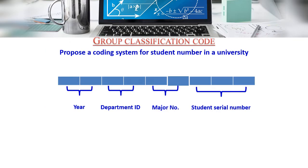A group classification code example: propose a coding system for a student number in a university, combining year, department ID, major number, and student serial number.